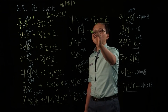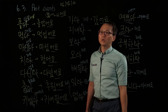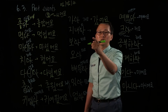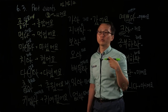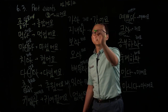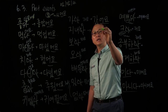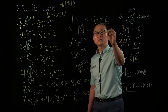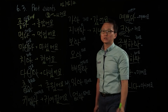지내다 — to spend time. 어떻게 지내세요? 저는 잘 지내요. I was okay: 지냈어요. The present form is 지내요, so take out 요 and add ㅆ어요: 지냈어요.